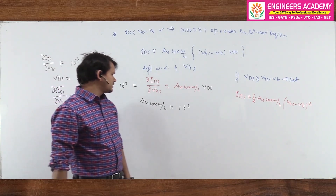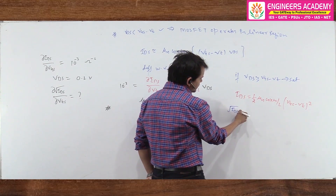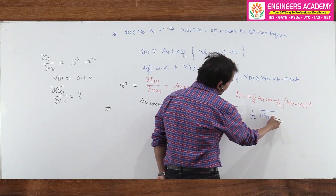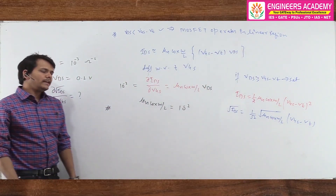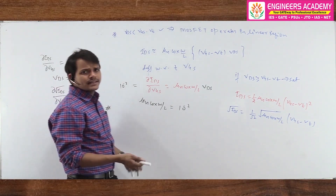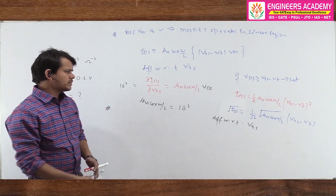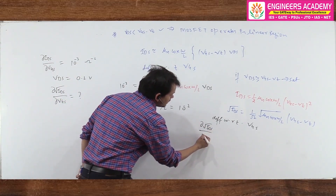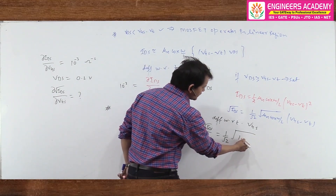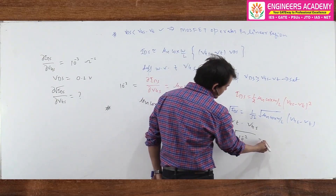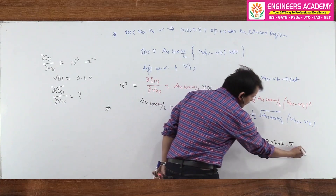Differentiating √IDS with respect to Vgs: d(√IDS)/dVgs = (1/√2)·√(μn·Cox·W/L). Since μn·Cox·(W/L) = 10⁻², we have √(μn·Cox·W/L) = 10⁻¹. So the slope = (1/√2)·10⁻¹ ≈ 0.070 √A/V. This is the answer.